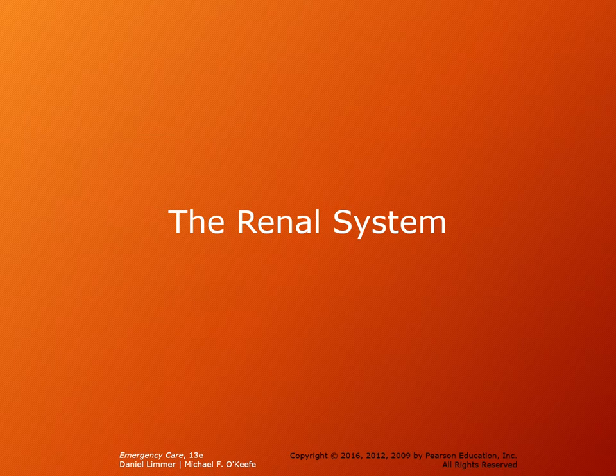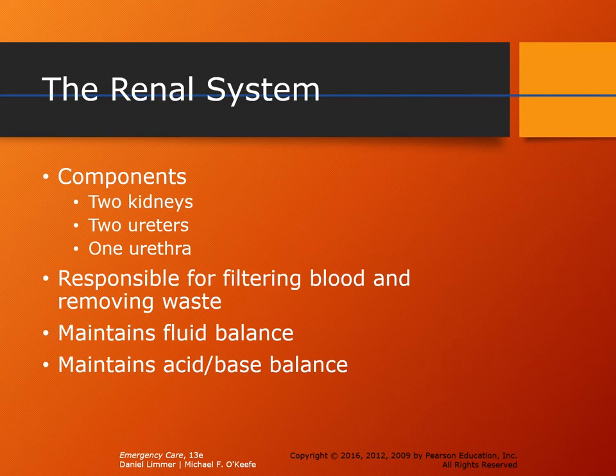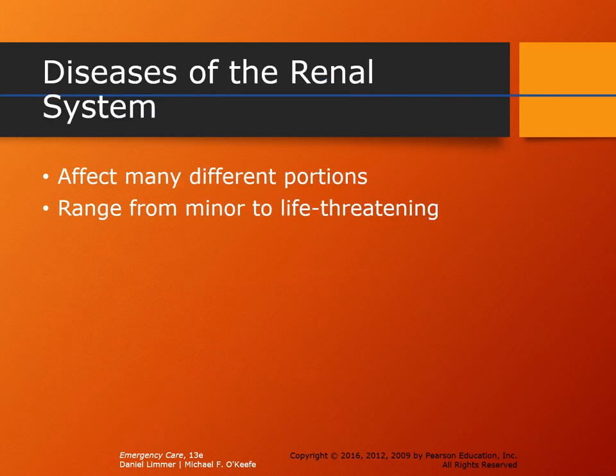Now that we've talked about blood as an organ, let's talk about the filter — the renal system. The renal system is comprised of two kidneys, two ureters, and one urethra. These organs are responsible for filtering blood and ultimately removing waste through urine. This system also helps us maintain fluid balance and acid-base balance.